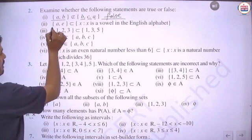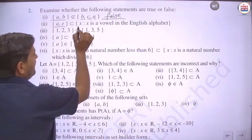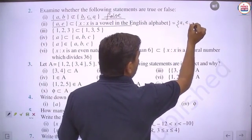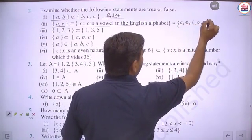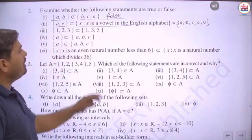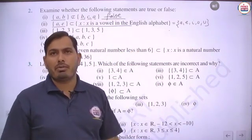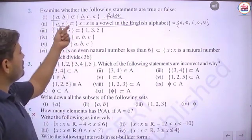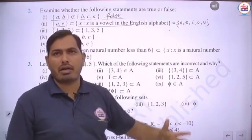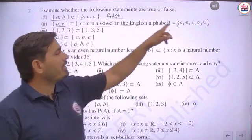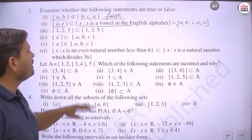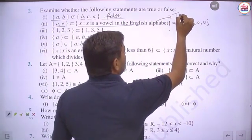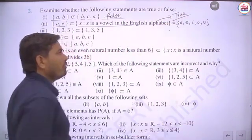Second part: {A, E} and X is a vowel in the English alphabet, which gives the roster form {A, E, I, O, U}. Both A and E belong to this set, and the subset symbol is given. So this statement is true.